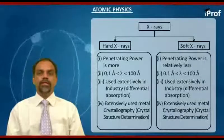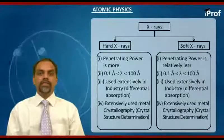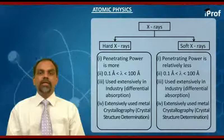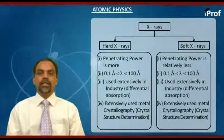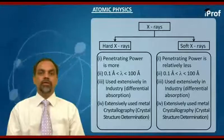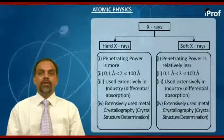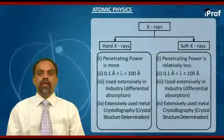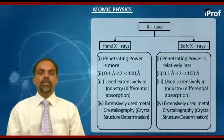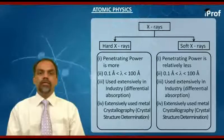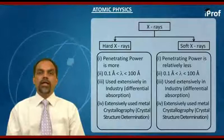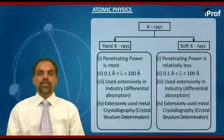To summarize: there are two types of X-rays — soft X-rays and hard X-rays. This classification is based on penetrating power; harder X-rays have more penetrating power, while softer X-rays have lesser. The wavelength range of softer X-rays is from 10 Å to 100 Å, whereas the wavelength range for harder X-rays is 0.1 Å to 10 Å.